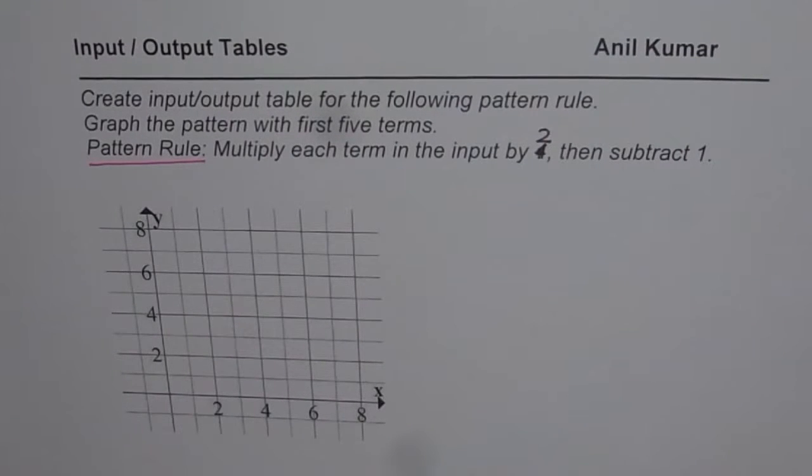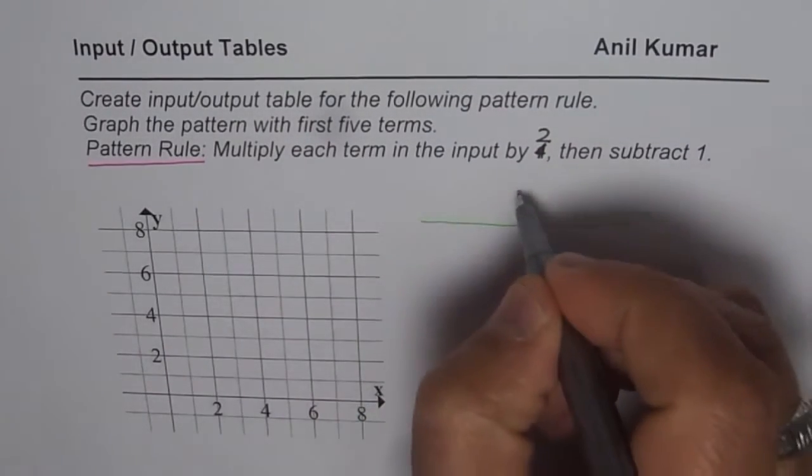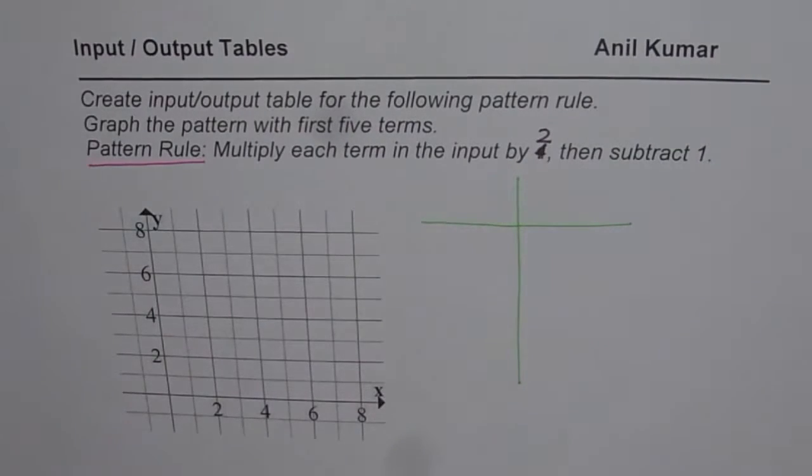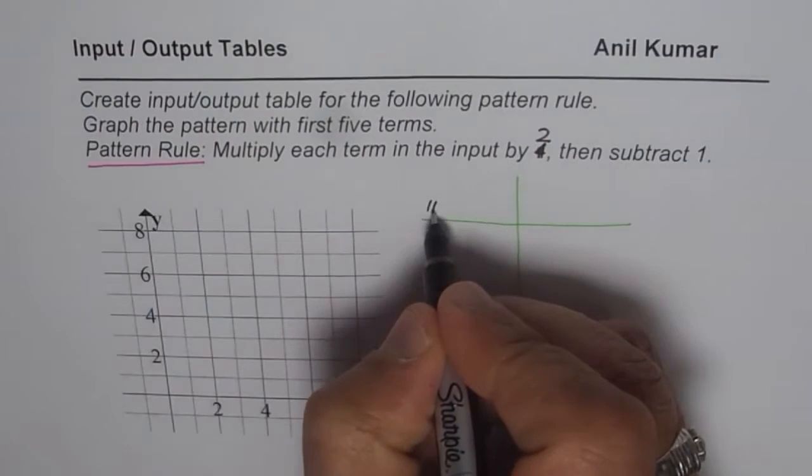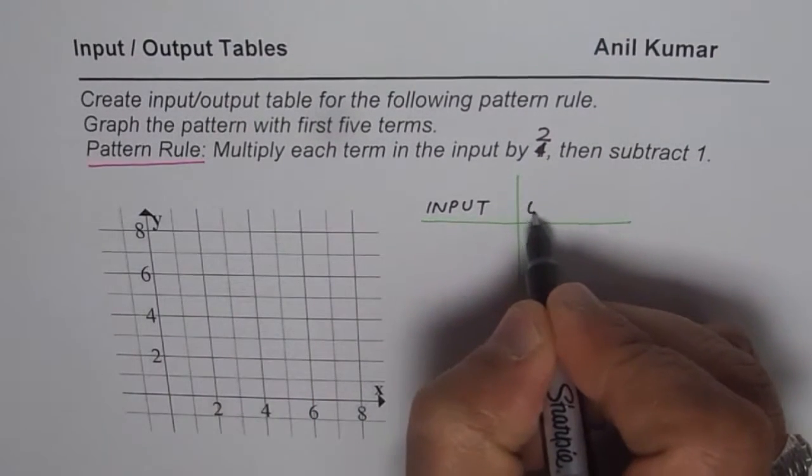So let's begin by creating input output table. Let us make two columns, one for input, the other one for output. So the column on the left will be input and on the right it will be output.